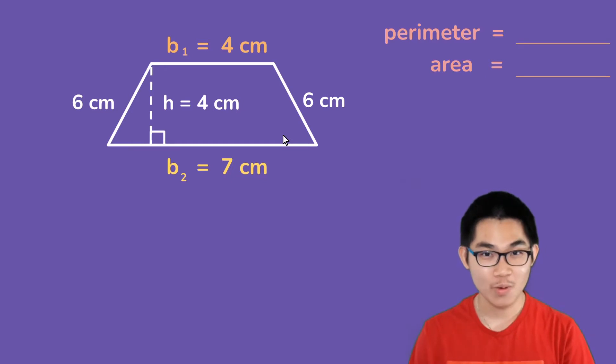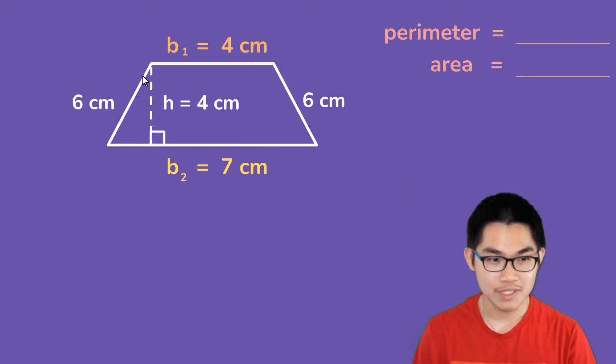Well, first of all, what is a trapezoid? It is a shape that has two sides that are parallel to each other. And in case you don't know, the word parallel means that these two sides face the same direction. Now, the other two sides do not have to be parallel, and that's okay.